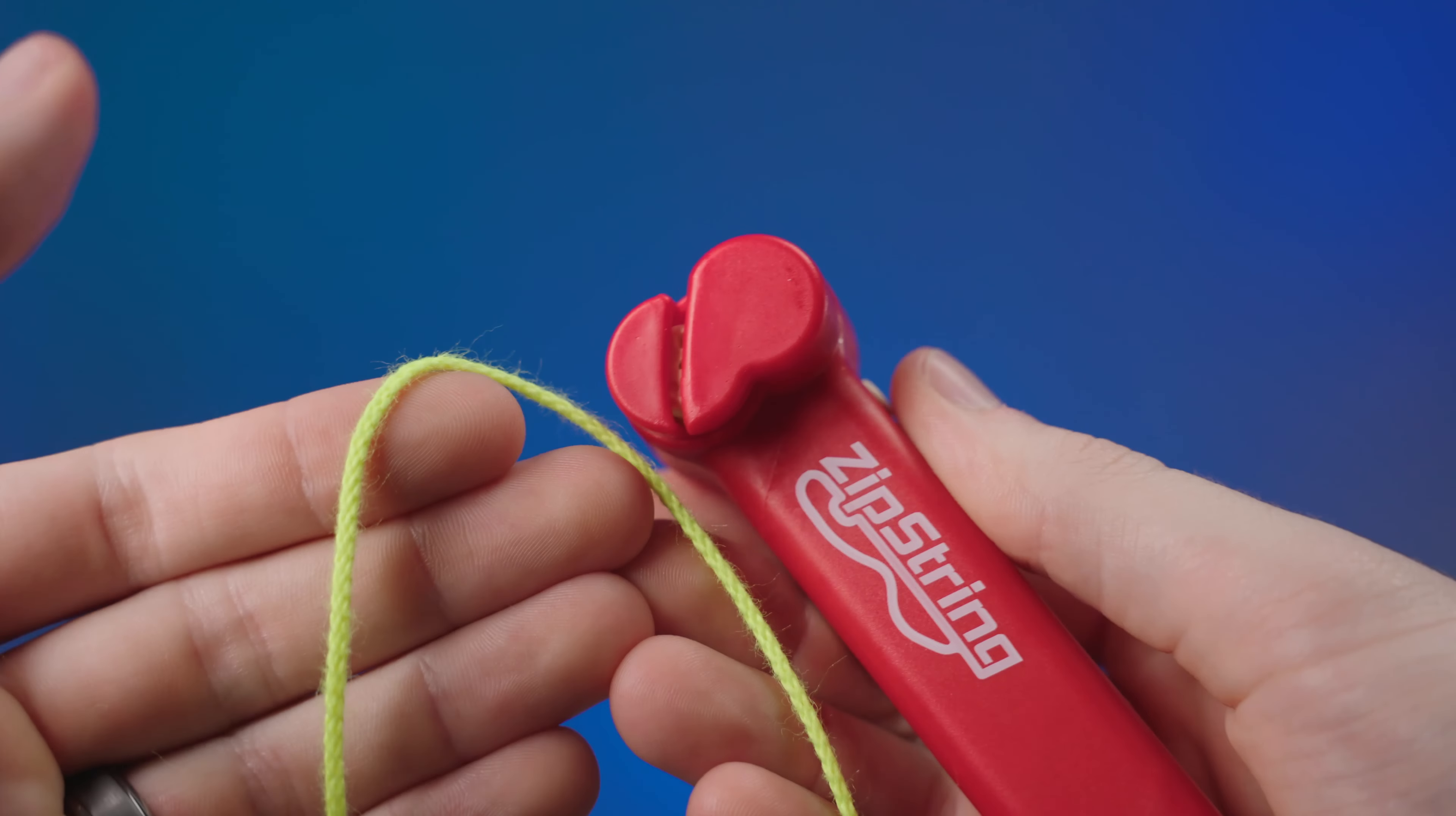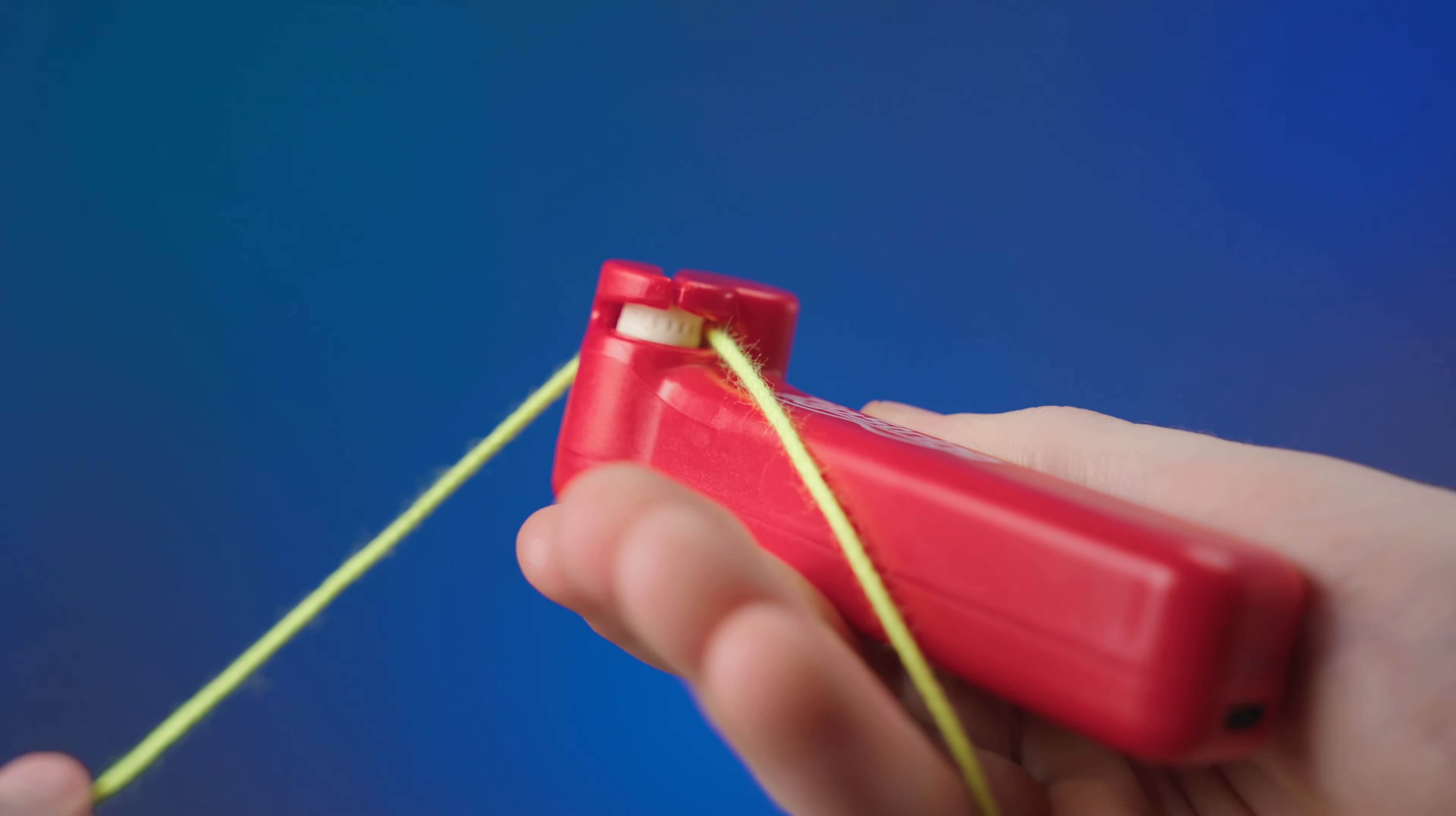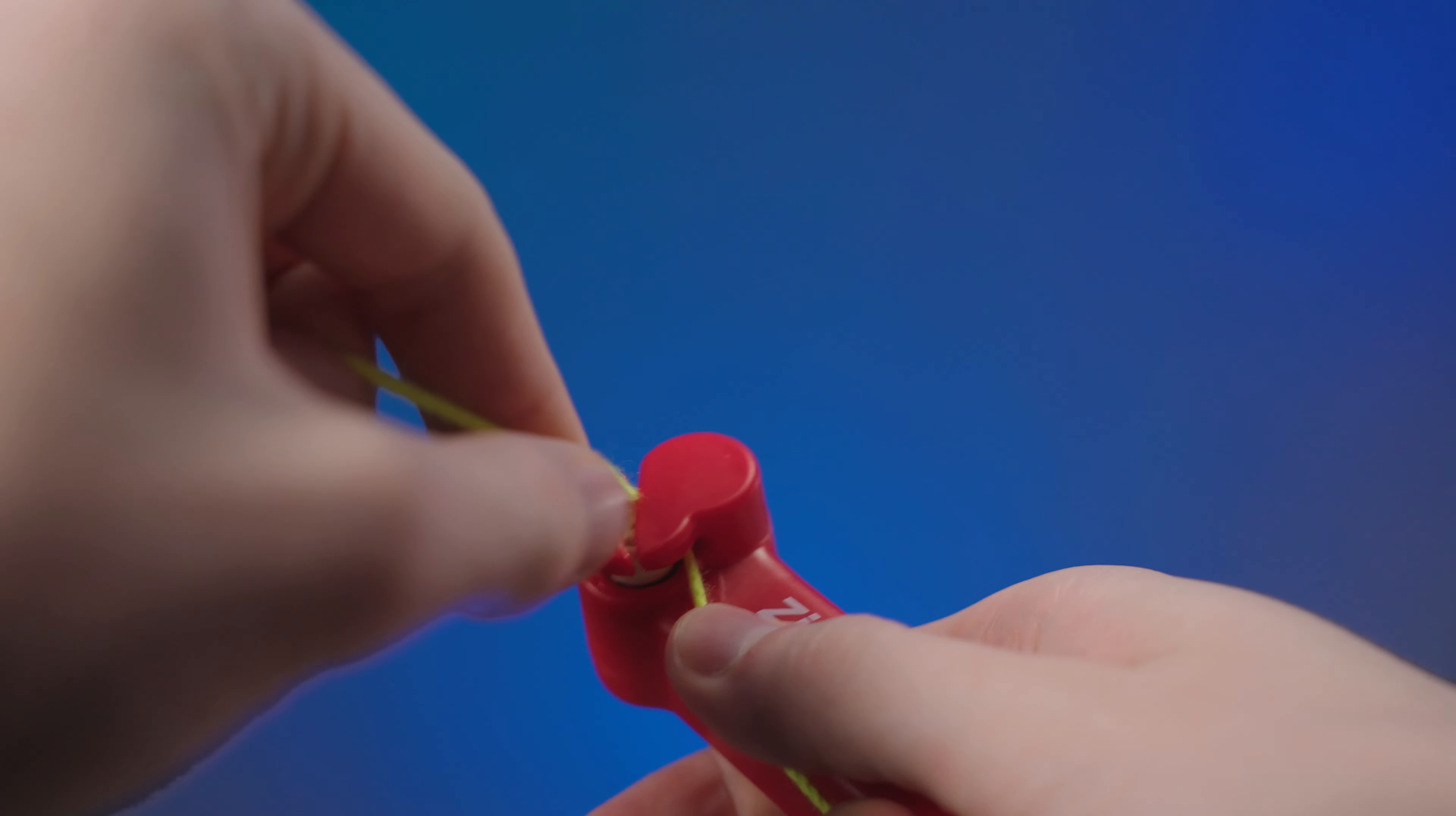Loading a string into your zip string is easy. All you do is floss the string so it is in between the two wheels. And to remove the string, you just pull it back out.